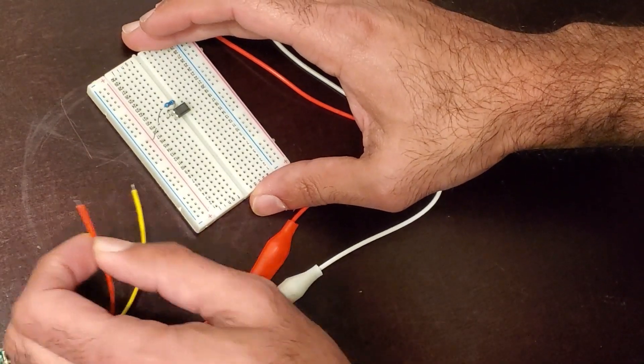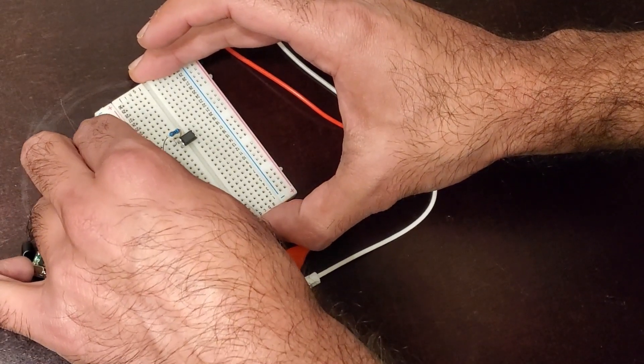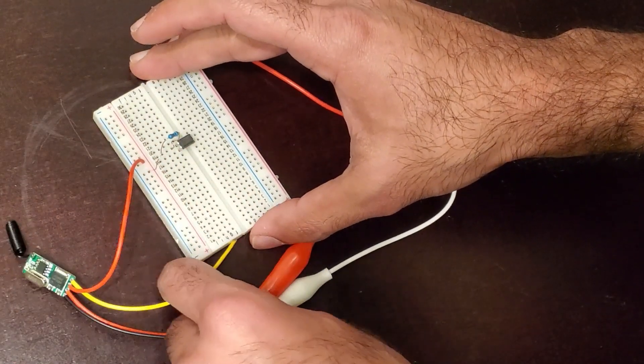After that, I connected the red output wire from the RF receiver to the positive rail of the breadboard, and I also connected the yellow negative output from the receiver to the cathode of the PC817.